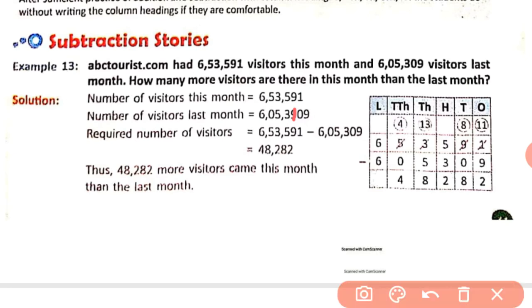Here, abctourist.com had 653,591 visitors this month and 655,309 visitors last month. What information does it give? It gives us the number of visitors this month: 653,591, and the number of visitors last month: 655,309. And we have to find out how many more visitors came this month than last month.